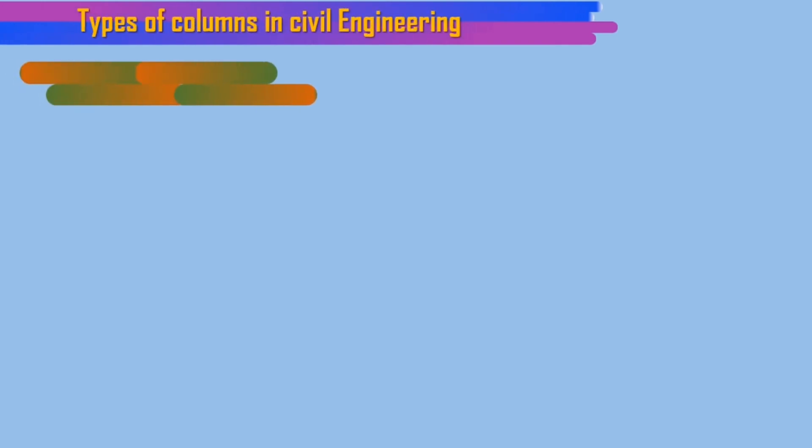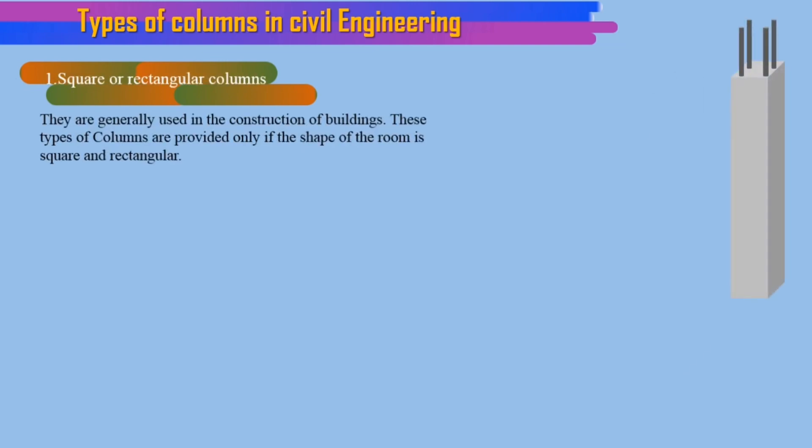Types of columns in civil engineering. 1. Square or rectangular columns. They are generally used in the construction of buildings. These types of columns are provided only if the shape of the room is square and rectangular.